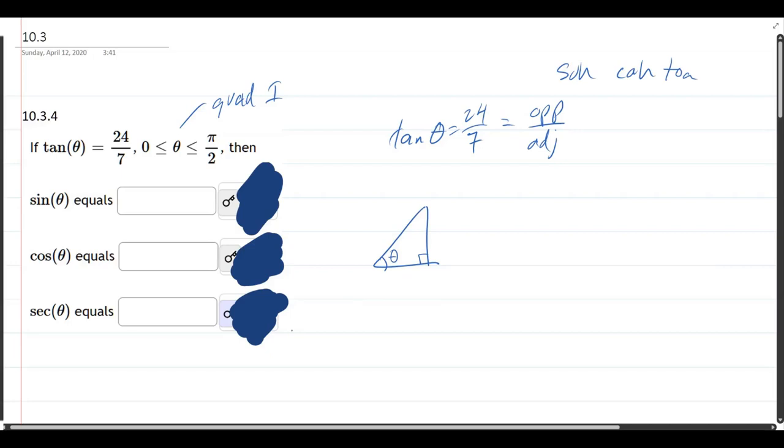So opposite, here's my angle, opposite of the angle is 24. Now you want to be careful, adjacent is not this side. That's the hypotenuse. Adjacent is the non-hypotenuse side next to the angle. We do need the hypotenuse. And we can use Pythagorean theorem.